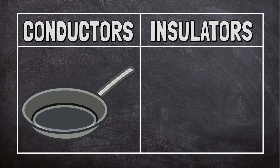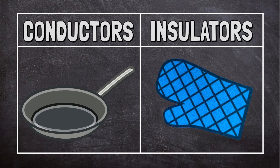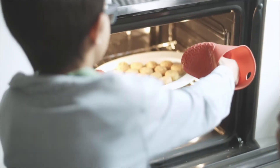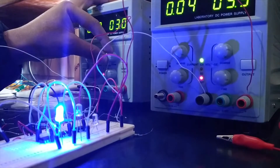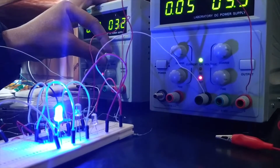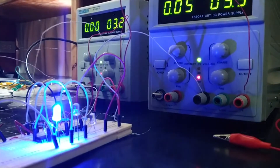The metal pan is a good conductor — the heat from the burner can easily transfer to the pan. An oven mitt is an insulator; it blocks the heat and keeps it from moving from the pan to your hand. If you wear an oven mitt, you can touch the hot pan without getting burned.